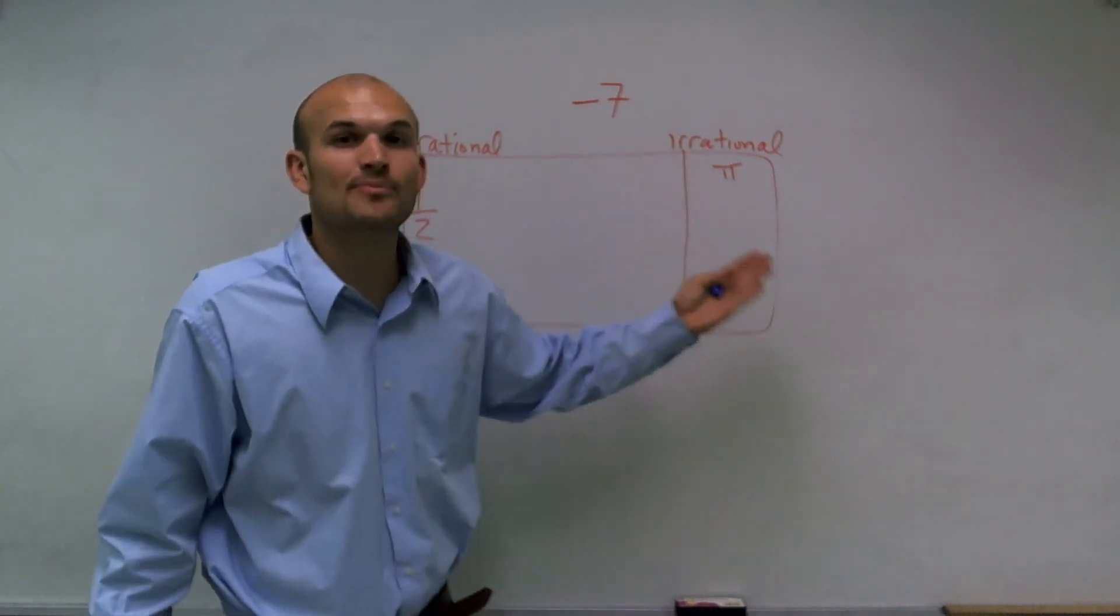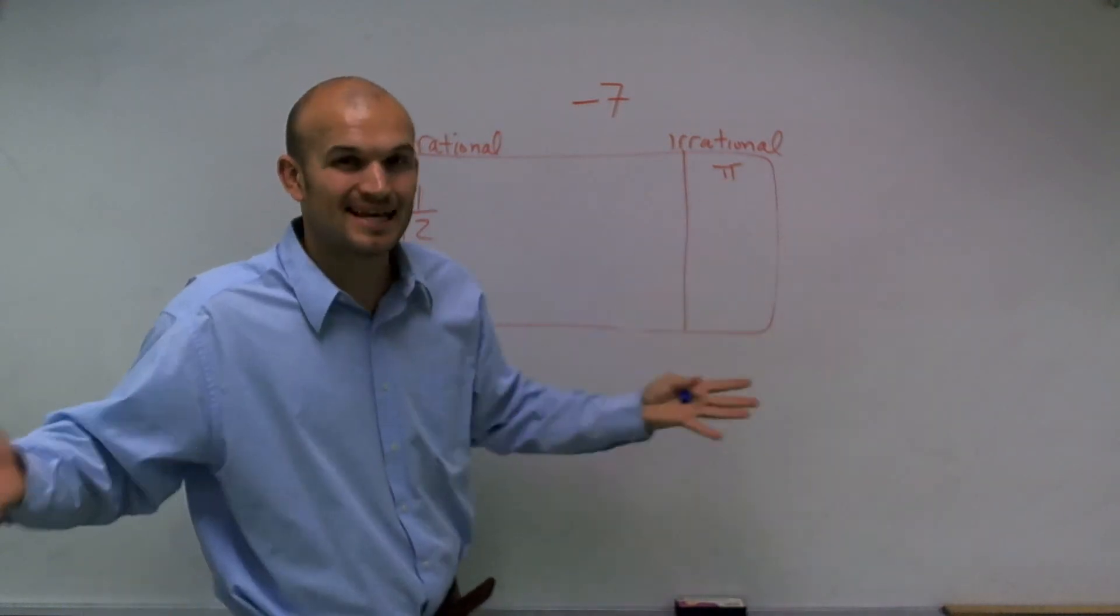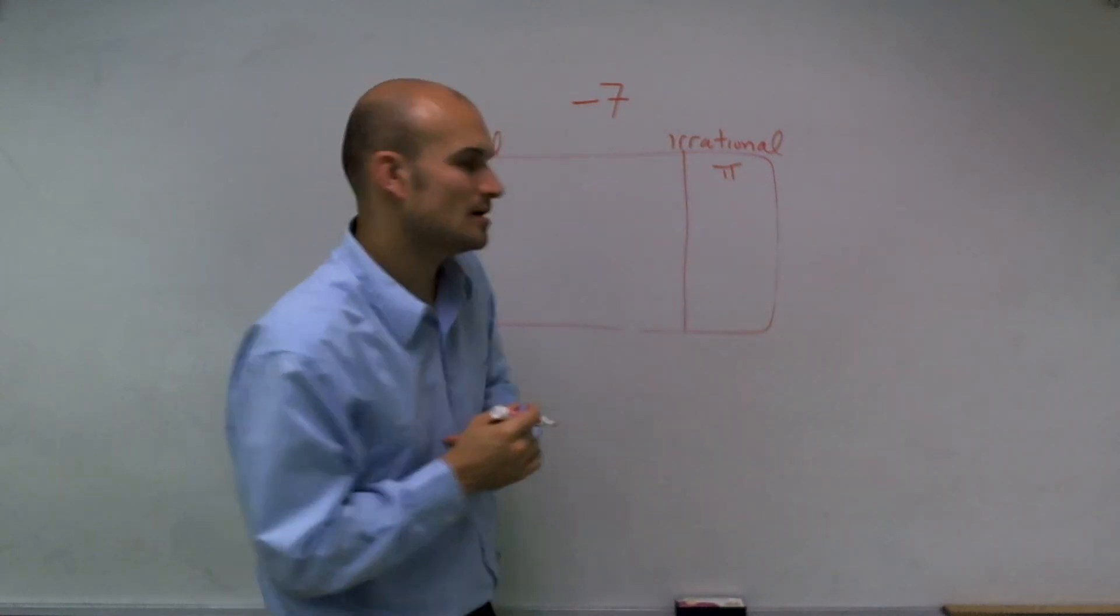But pi we know is the number 3.14159 and so on, goes on and on forever. So we can't actually write down the exact value of pi. We have to represent it with this symbol.